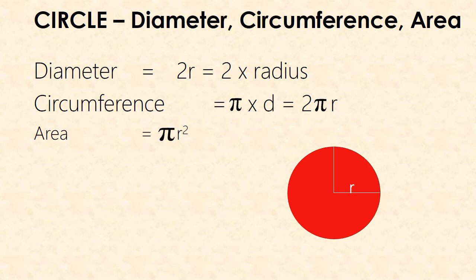Next, the formula for the circle: diameter, circumference, and area. The diameter equals 2R, where R is the radius. The circumference equals pi times D, that is 2 pi R. And the area equals pi R squared.